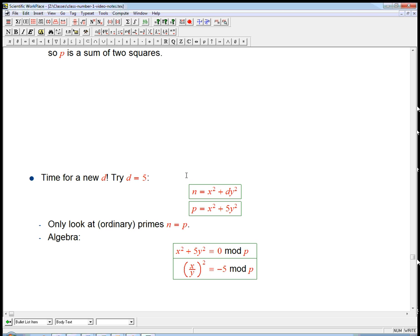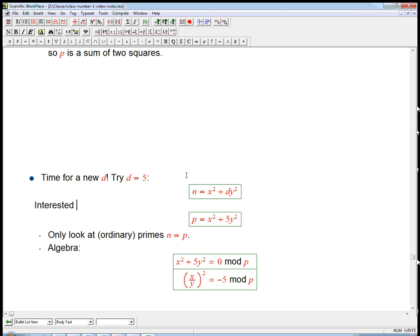we're usually interested in the case where n is much greater than d. If it's not much greater than d, then it's really easy brute force to figure out if n can be expressed as x squared plus dy squared.